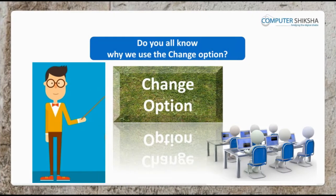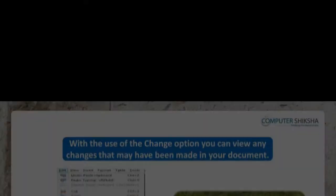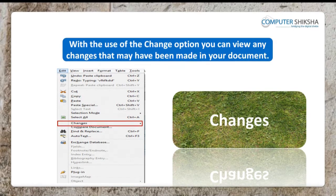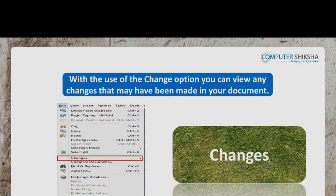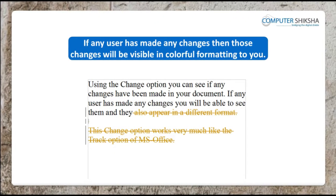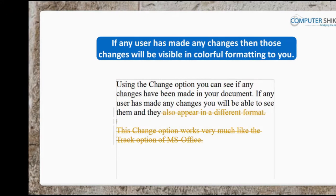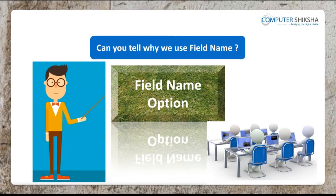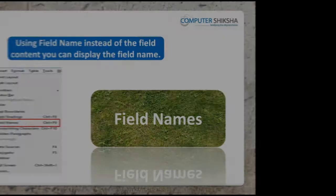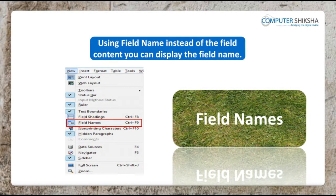Do you all know why we use the Change option? With the use of the Change option, you can view any changes that may have been made in your document. If any user has made any changes, then these changes will be visible in colourful formatting to you. Can you tell why we use the Field Names option? Using Field Name, instead of the Field Content, you can display the Field Name.